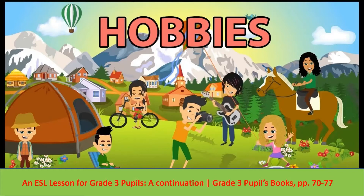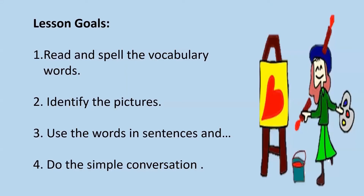Since this is a continuation lesson from our previous lessons, these vocabulary words and activities are taken from your grade 3 pupil's book on pages 70 to 77. So before we move on to our vocabulary review, let's be reminded once again of our goals for this lesson.